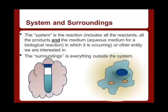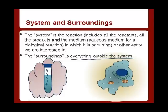Before we get started, we have to quickly define some terms: the system and the surroundings. The system is the reaction — basically it's what we care about. It includes all the reactants, all the products, and the medium. Everything else, everything that is not the system, is the surroundings. If we had some liquid in a test tube and that was our system, that would be our system, and everything else that isn't the liquid in our test tube would be our surroundings.